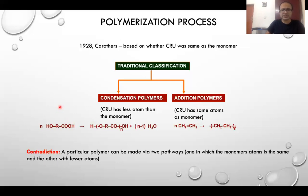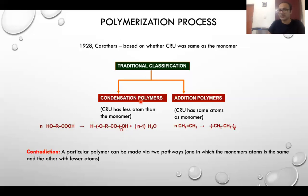Looking at the example here, we have a bifunctional group that undergoes polymerization to form polyester with the removal of water, so it is clearly a condensation process. The constitutional repeating unit here, -ORCO-, has a lesser number of atoms compared to the monomer, which is why polyester is classified under condensation polymers.